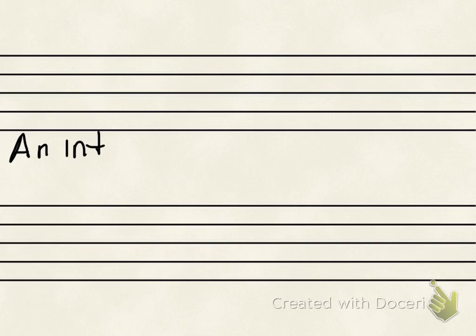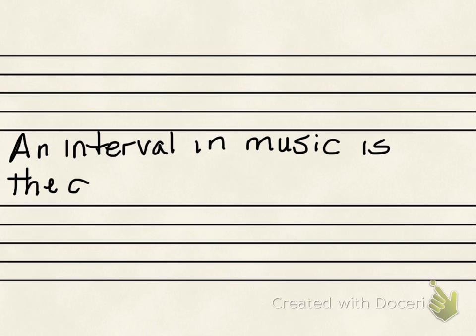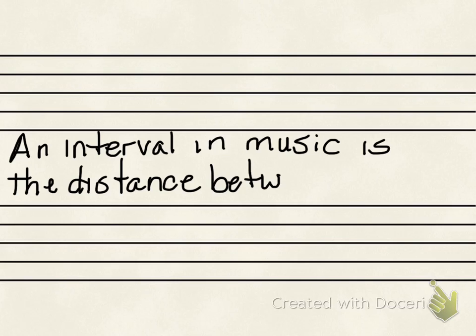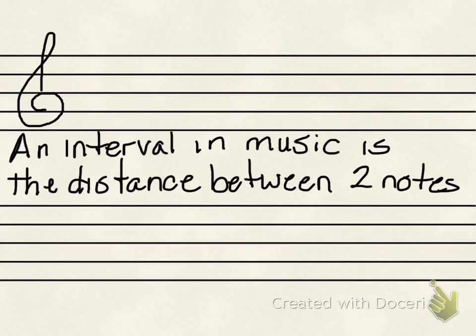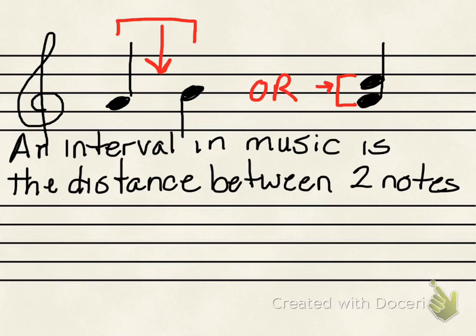So an interval in music is the distance between two notes. For example, we could have two notes that are separated, as in the first example, or we could have the two notes on top of each other, as in the second example.